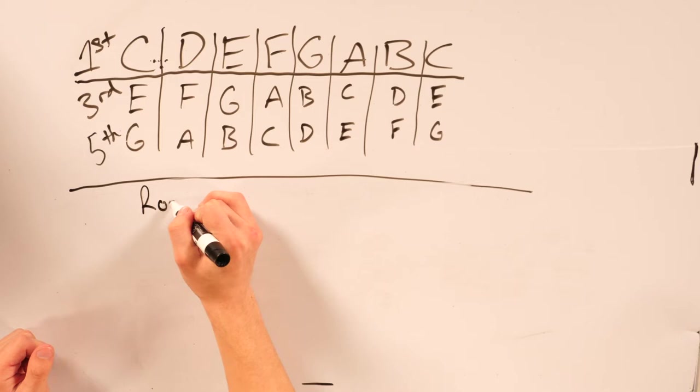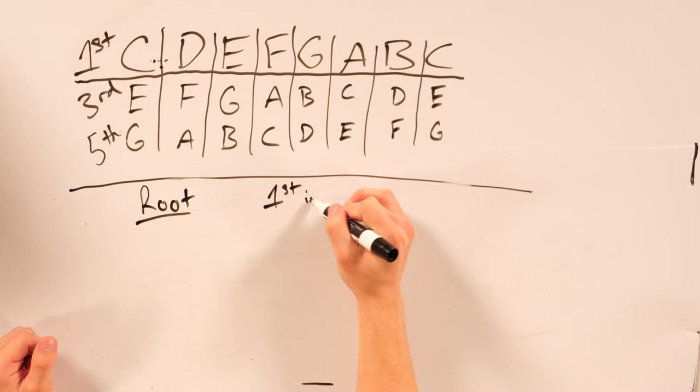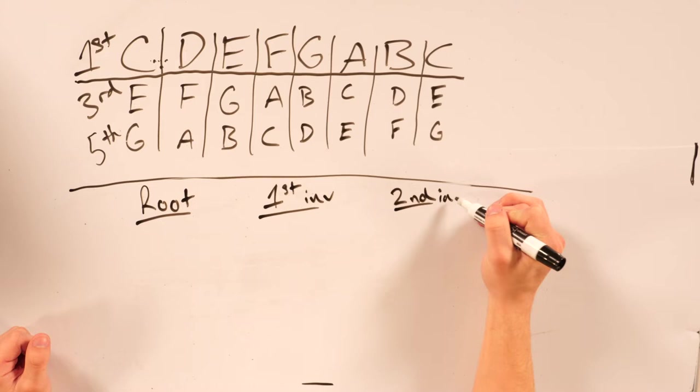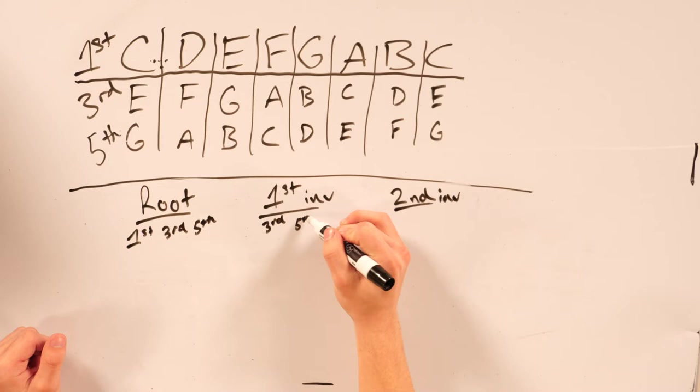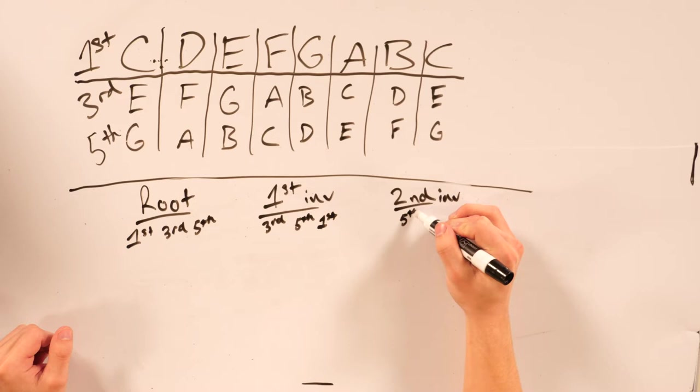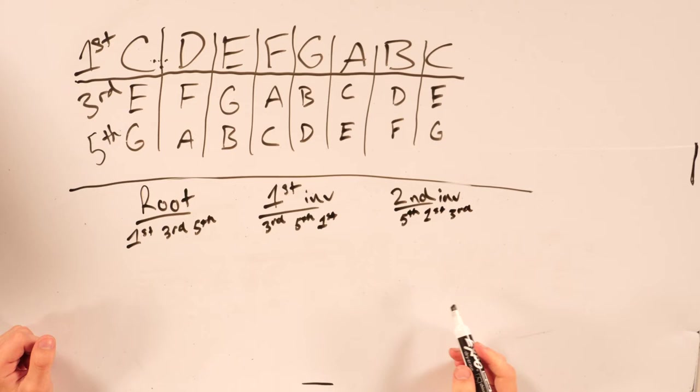So now I'm going to teach you how to do chord inversions. First, you have your root chord, you have first inversion, and you have your second inversion. The root would be the first, the third, and the fifth. The first inversion would be the third, the fifth, and the first. And the second inversion would be fifth, first, and third. And then you'd go right back to the root.